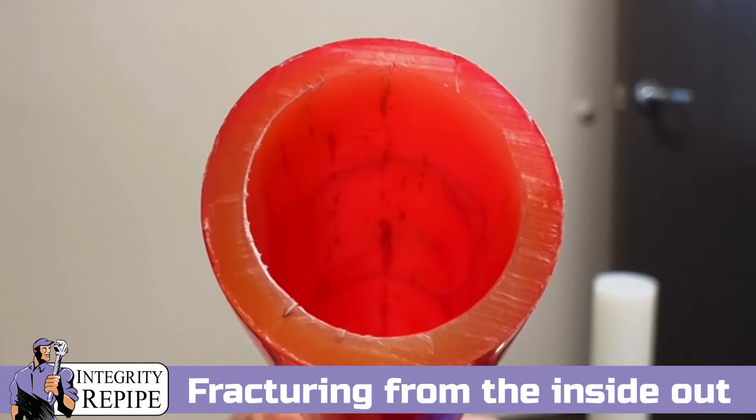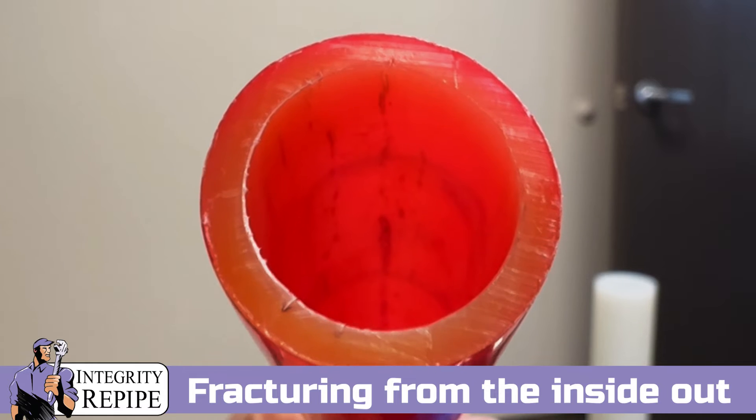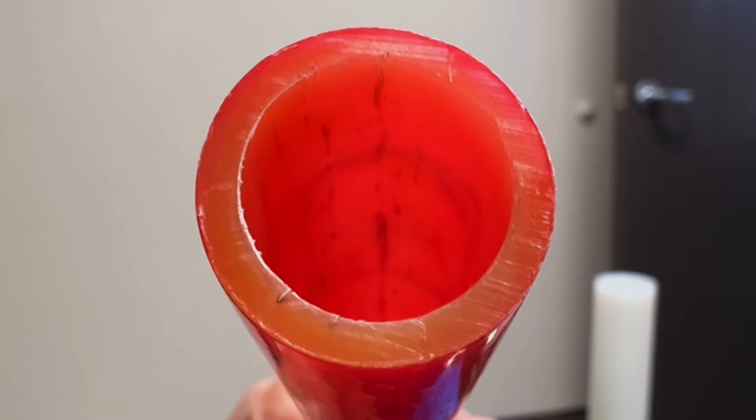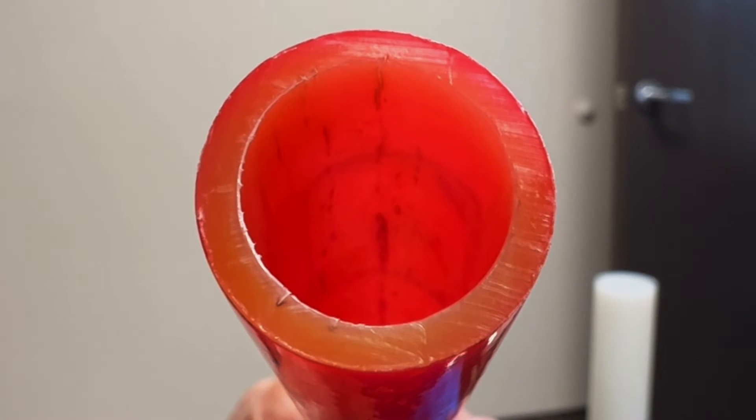Now you'll see those black marks in the inside of the pipe. That's the cracks that are happening from the inside out.